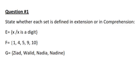The first one, E, they are describing for us that X is a digit. So this is a comprehension method. In the second one, in F, they are listing for us numbers 1, 4, 5, 9, 10. Then this is an extension method. The third one also is extension because they are listing for us names. So it's an extension method.